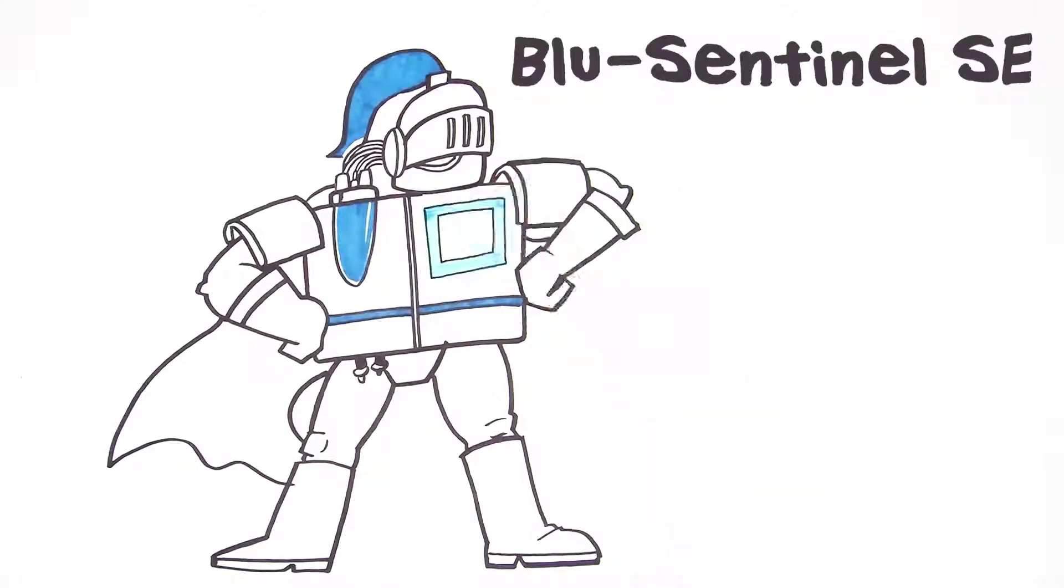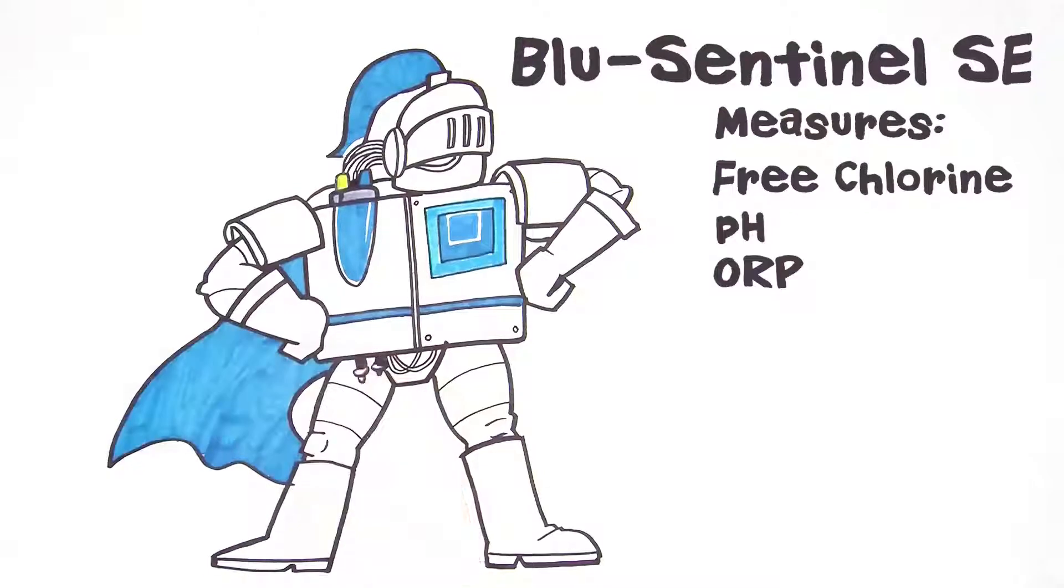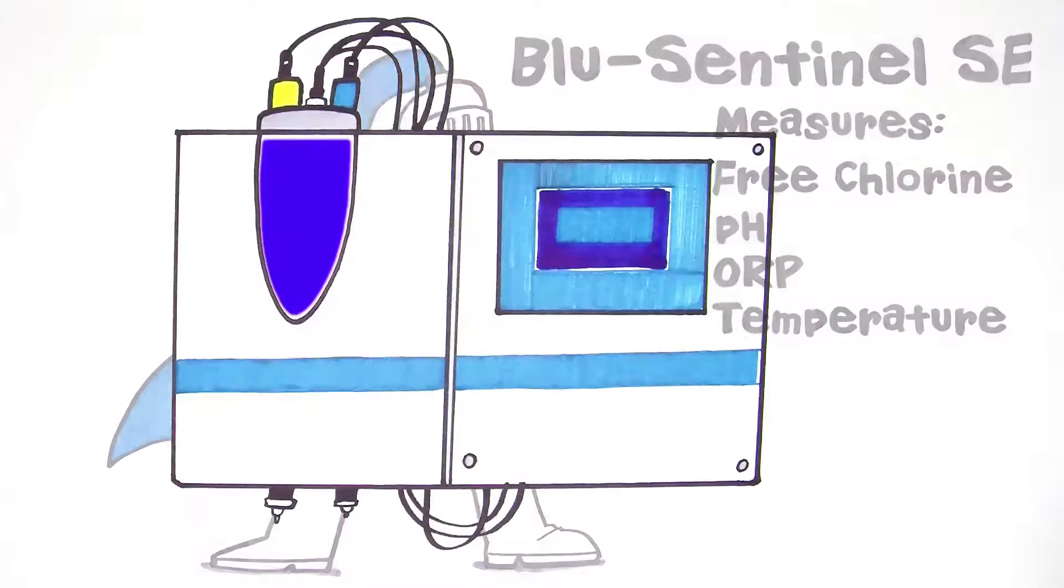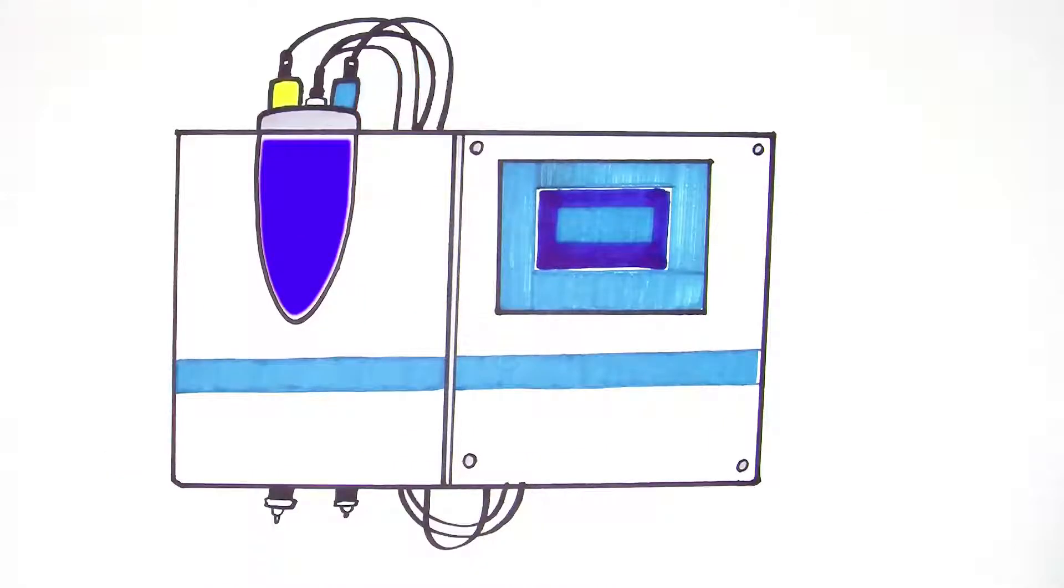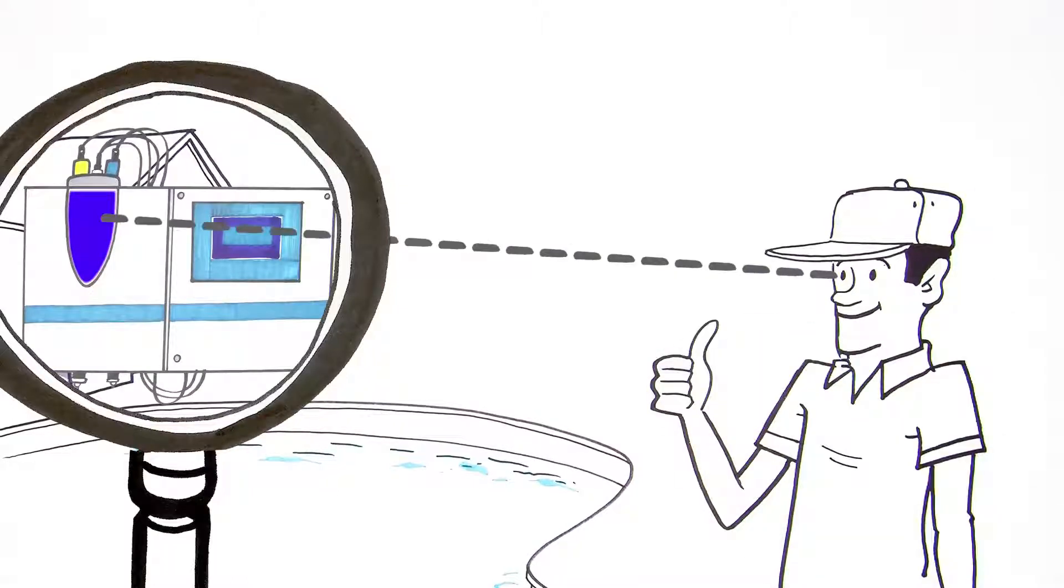The Blue Sentinel is an advanced chemical controller that measures free chlorine, pH, ORP, and temperature. The Blue Sentinel controller also offers a unique visual indicator built into the flow cell. It quickly and clearly lets operators know the status of their pool water with just a glance.